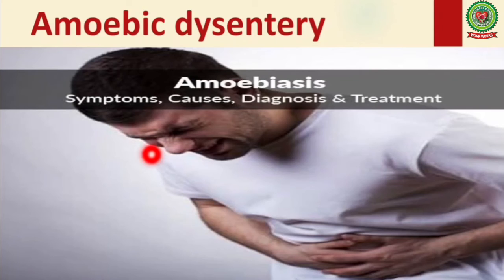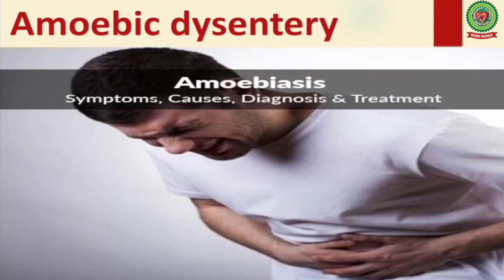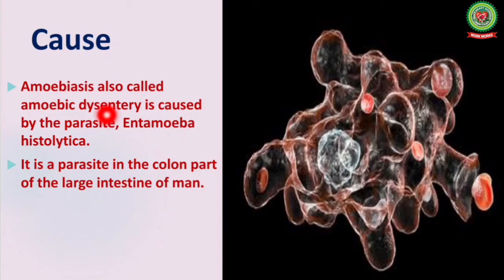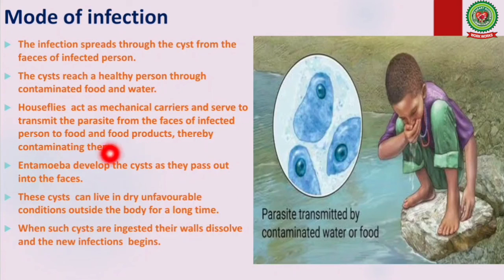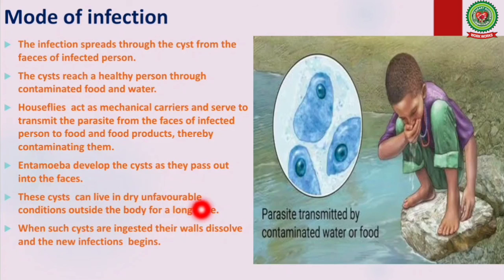Next, we will discuss amoebic dysentery, also called amoebiasis. It is caused by a parasite — the amoeba Entamoeba histolytica — which is a parasite in the colon part of the large intestine of man. The infection spreads through cysts from the feces of an infected person. These cysts reach a healthy person through contaminated food and water. House flies act as mechanical carriers, transmitting the parasite from the feces of an infected person to food, thereby contaminating it.